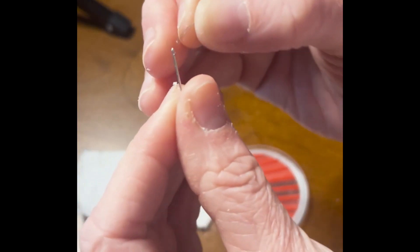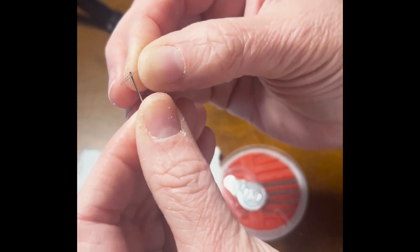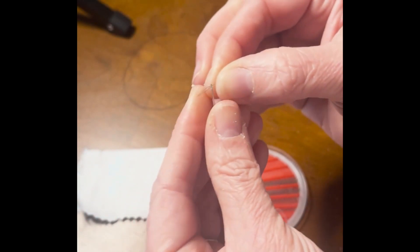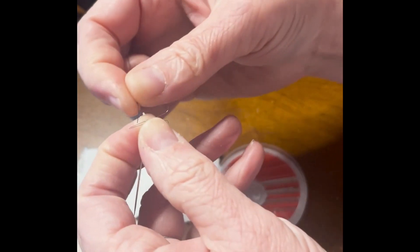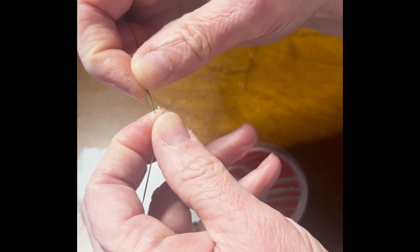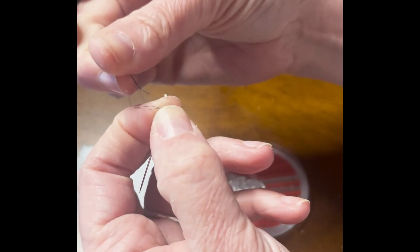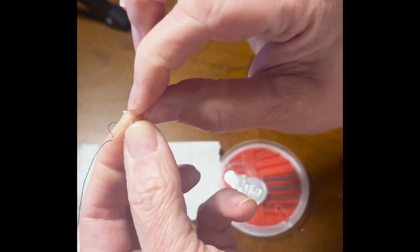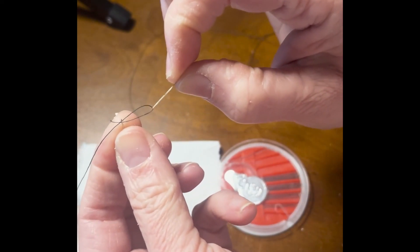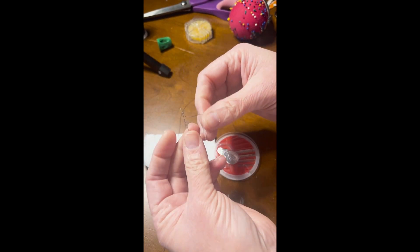So you're going to take your needle and where the eye is or the hole, you're going to stick that metal floss through. Then you are going to take your thread and push it through the metal floss and then pull that floss back through your needle and there you are now threaded.